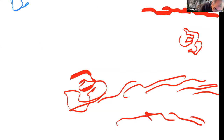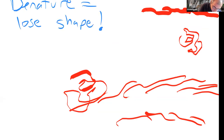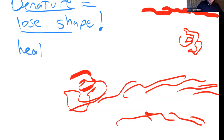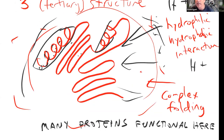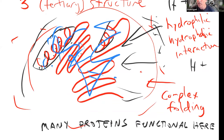Let's talk about denaturing. The word 'denature' means it loses its shape. What can cause a protein to denature? Heat — and what is heat? If you think about this intricate folding, and you start adding more and more energy, everything is jiggling. Before you know it, everything's all tangled in on itself irrevocably — like a string so tangled there's no way you're ever going to untangle it again. That's one way you can denature proteins.